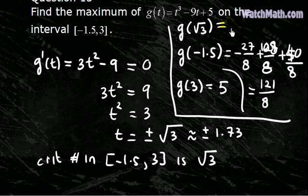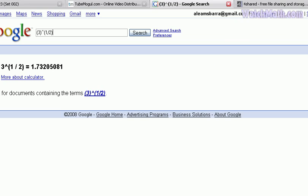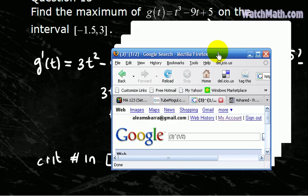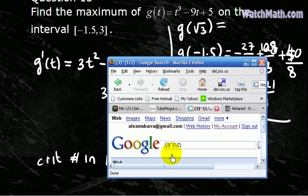So 40 over 8. And for this one we cannot avoid using a calculator, so let's use Google to do this job. So this is square root of 3, so we cube this, minus 9 times square root of 3, plus 5.